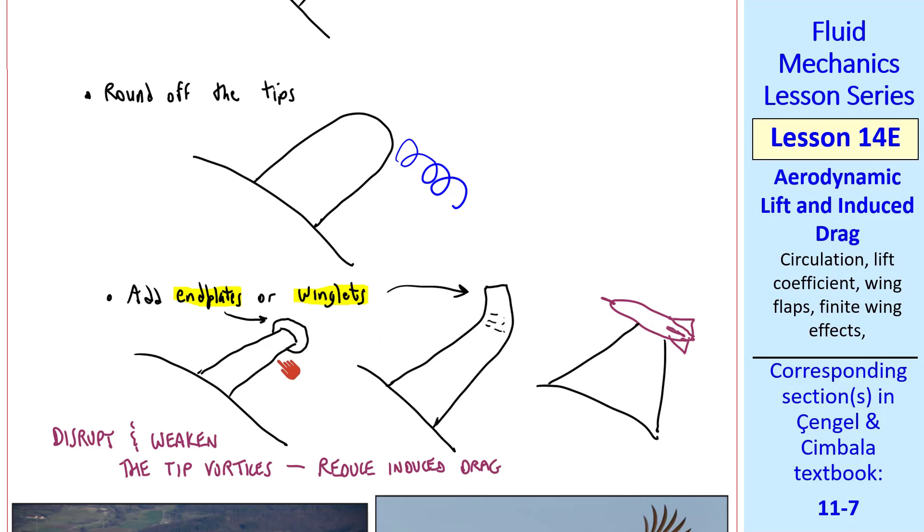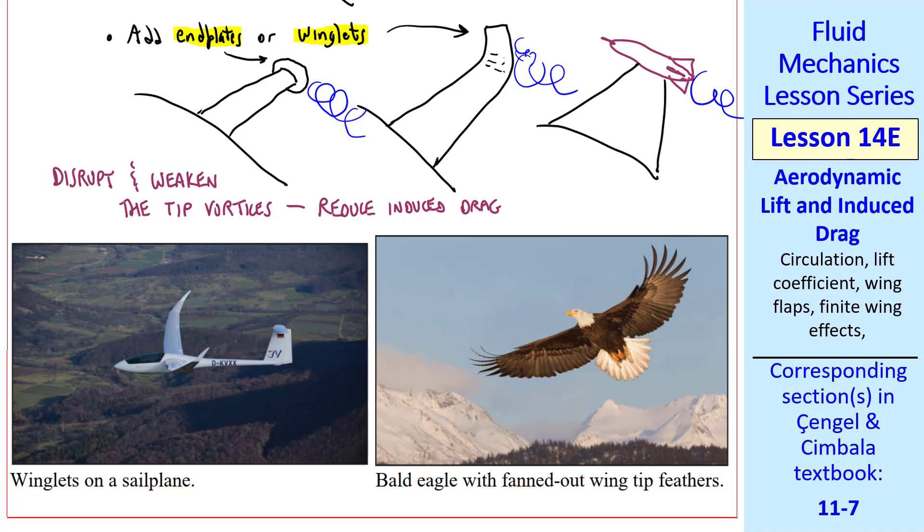Physically, all of these kind of block the flow from going around from the high pressure to the low pressure zone. You'll always get some tip vortices, but again, they'll be larger in diameter and have less kinetic energy and therefore less induced drag. Here are some examples of winglets on a sailplane. If you've flown recently, you've probably flown on an airplane that has this kind of winglet. They're very popular because they save fuel by reducing drag. Sailplanes really need all the help they can get in reducing drag because they have no engine.